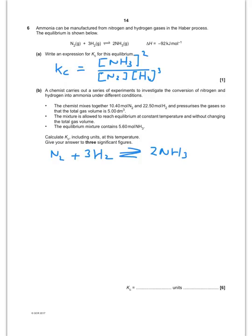Okay, so now we're going to do a calculation. So I've written the equilibrium down here again, just helps a little bit to sort this out. So let's put these numbers in. So for nitrogen I have got 10.4 moles, hydrogen 22.5, and none of ammonia to start off with. And after I've reached equilibrium I've ended up with 5.60 moles of ammonia.